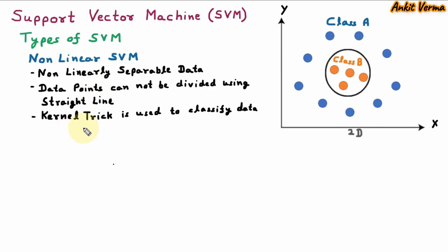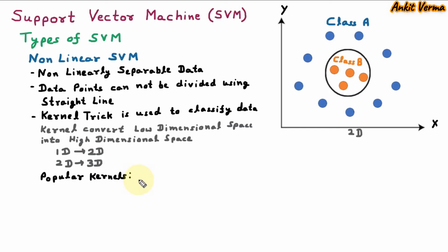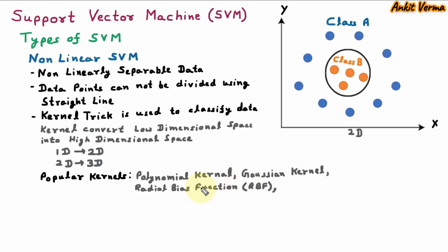The kernel converts low-dimensional space into high-dimensional space. If data points are in one dimension and not linearly separable, the kernel will convert to the second dimension and separate the data points. If data points are in the second dimension and not linearly separable, the kernel will convert to the third dimension and separate the data points. There are various popular kernels, such as polynomial kernel, Gaussian kernel, Radial Basis Function (also called RBF), and sigmoid kernel. Different kernels are used in different applications.